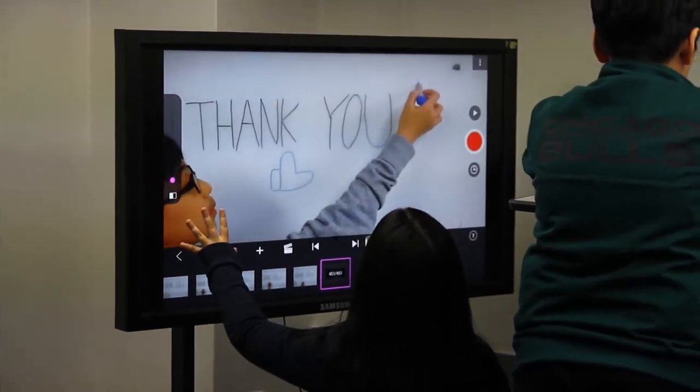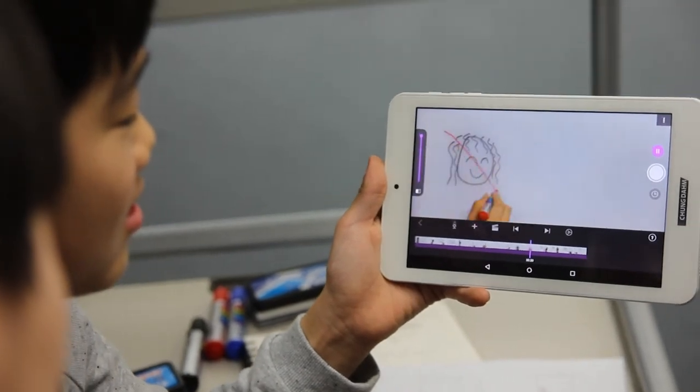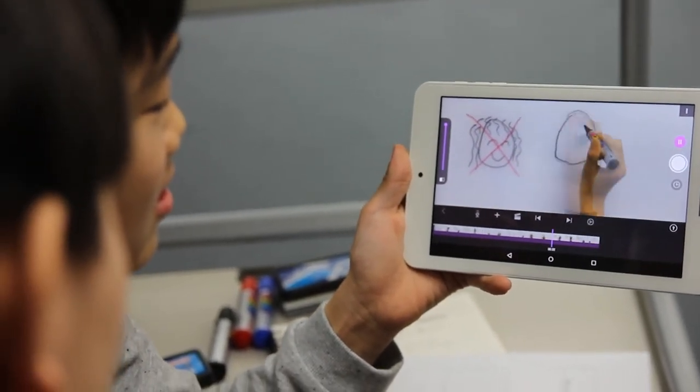To make these projects, we're going to be using two apps. The first is Stop Motion Studio to do all of the animating, and then we're going to export to KineMaster to do the dubbing.